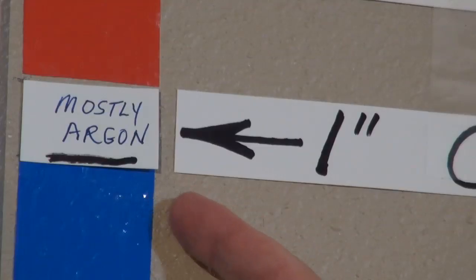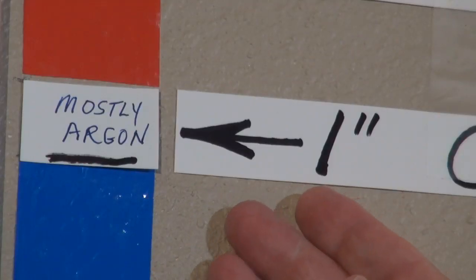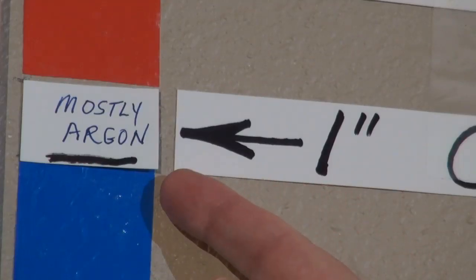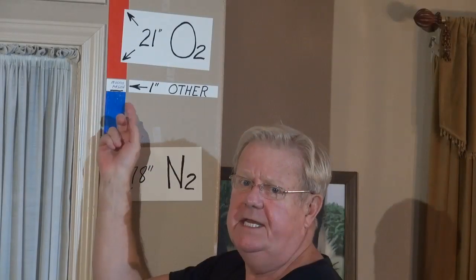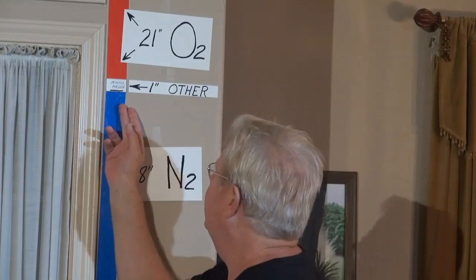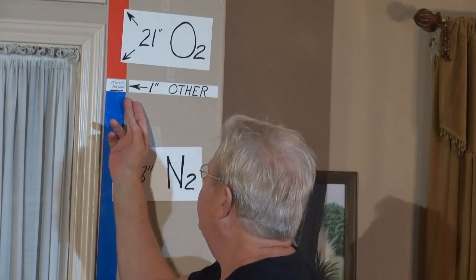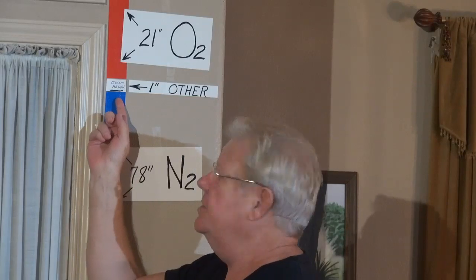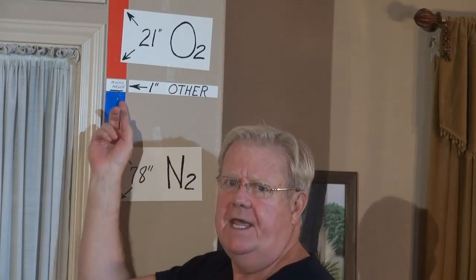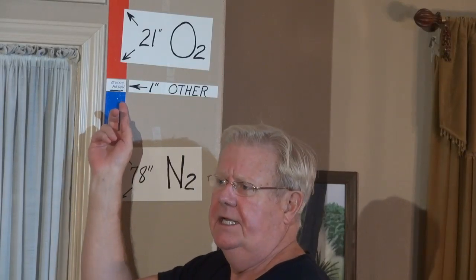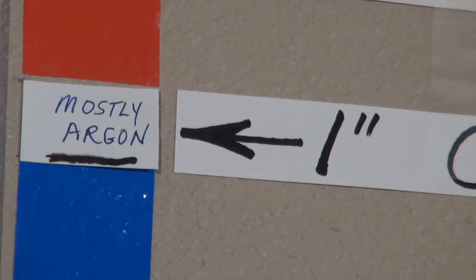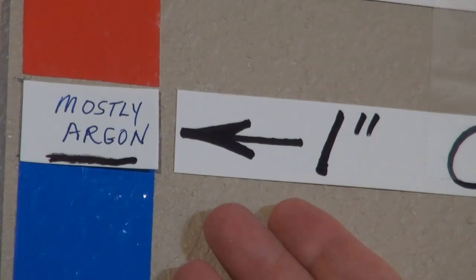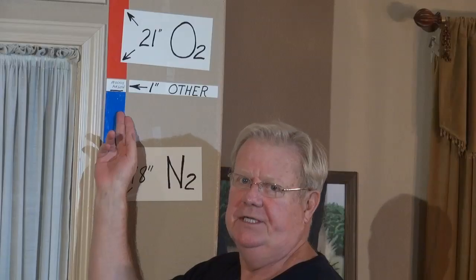One inch — that's it. So in that one inch, there is mostly argon. 93% of that is argon. And there's also methane, and helium, and xenon, and radon, and then there's carbon dioxide.